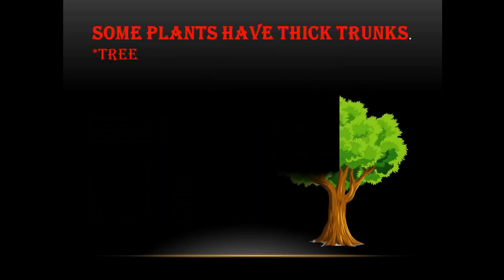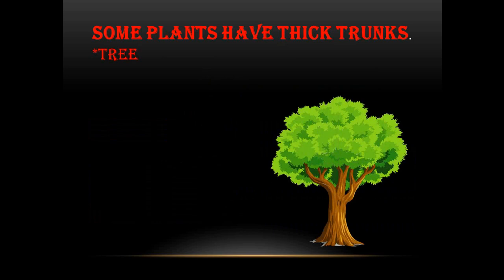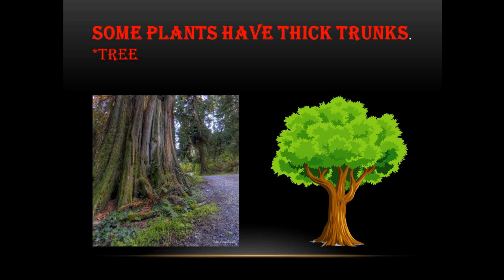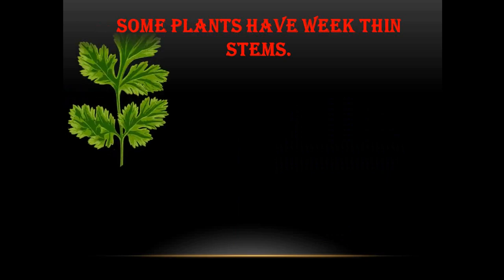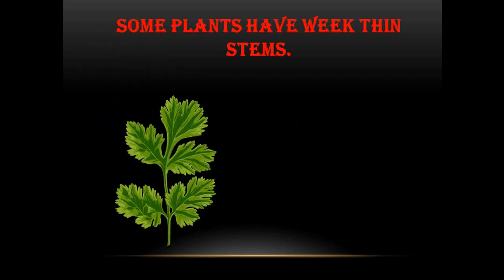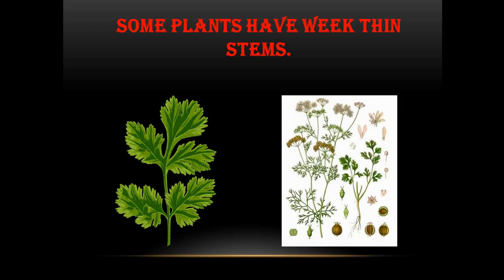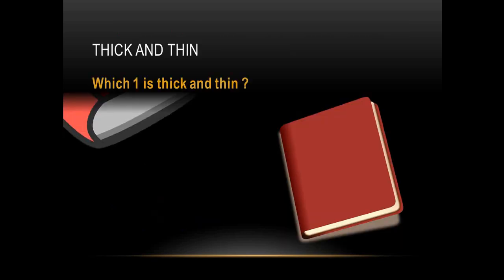Some plants have a thick trunk. In front of you there is a tree — you know that this brown part is called a trunk. The plant that has a thick trunk is called a tree. So if the question is: which type of plant has a thick trunk? The answer is tree. Now, some plants have weak, thin stems. In front of you, you can see these are also plants but they have thin stems, not thick.